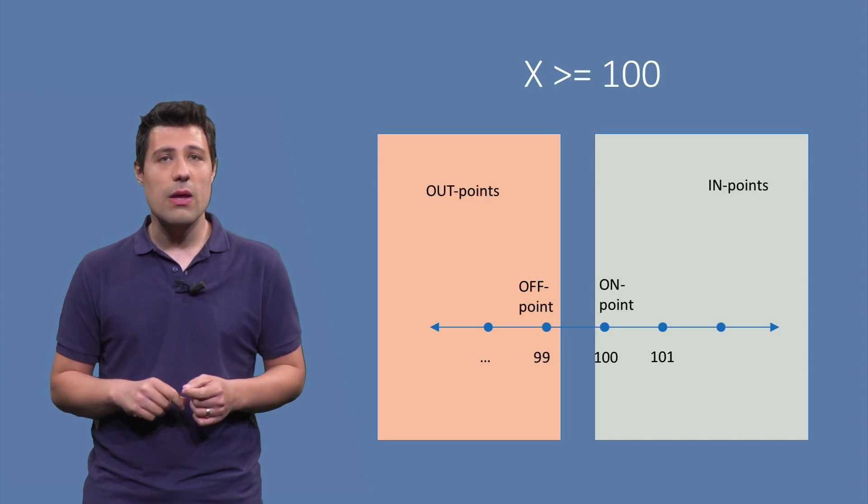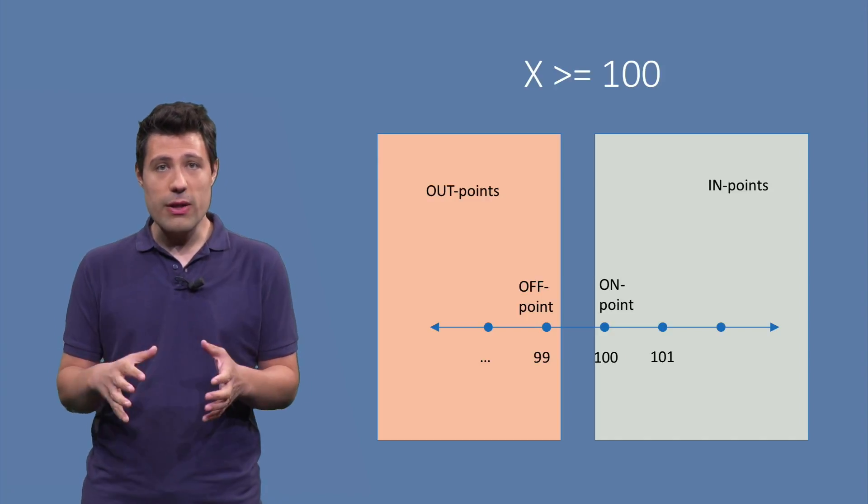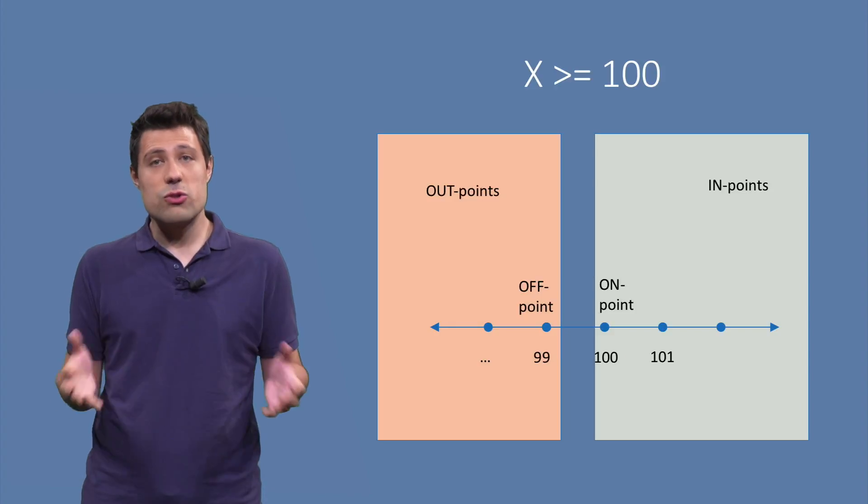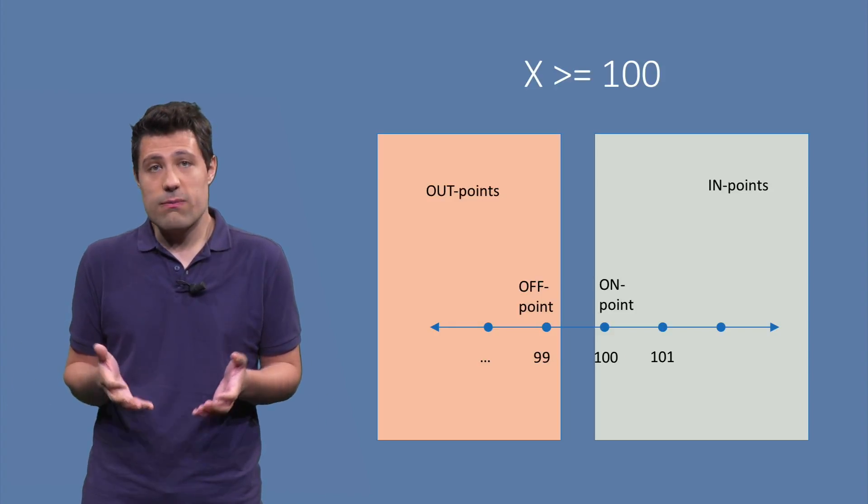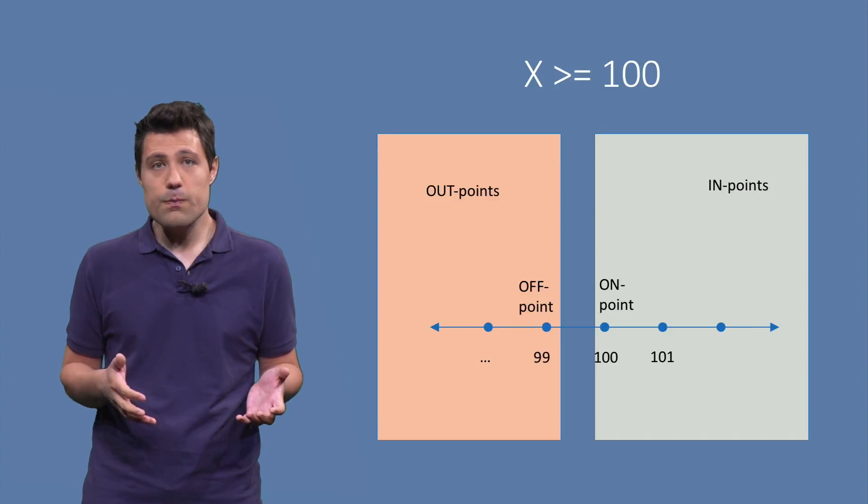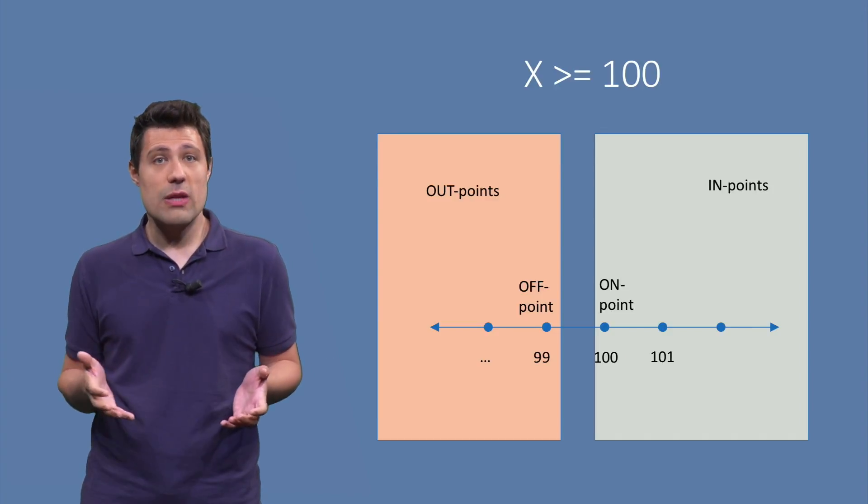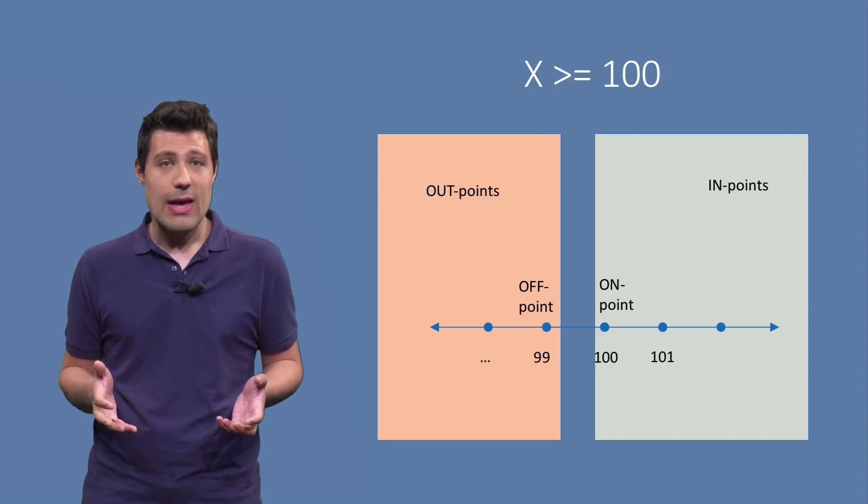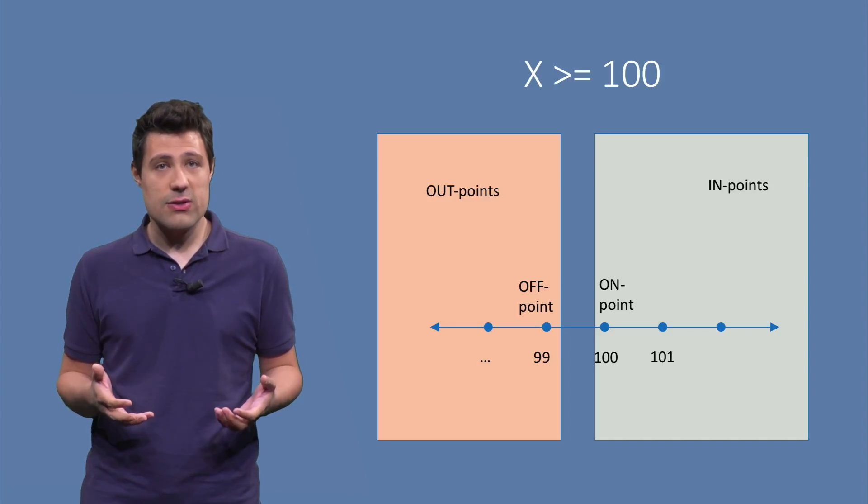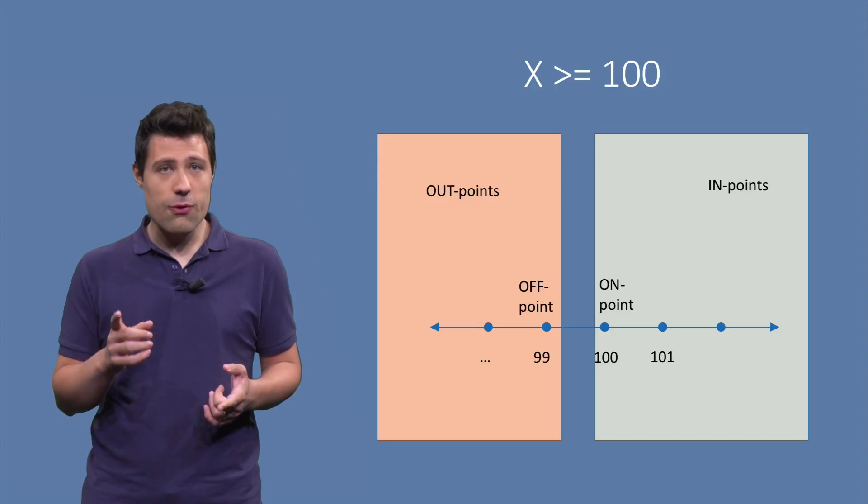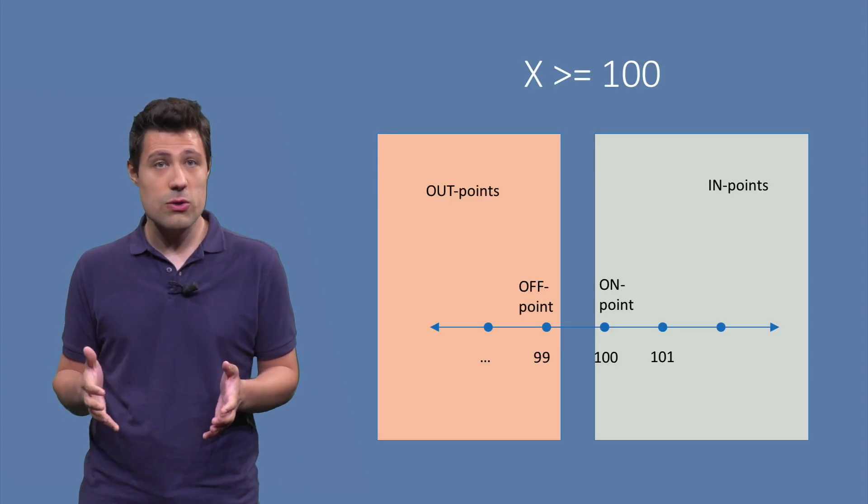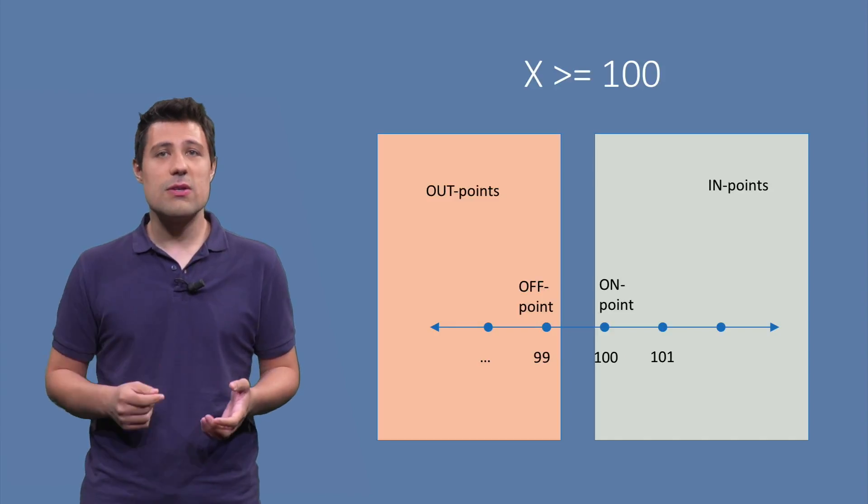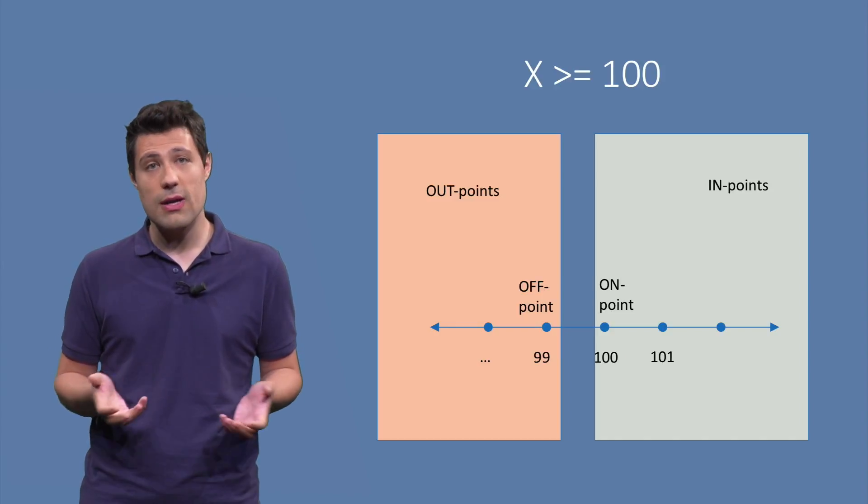Following this idea, we can think about in points, and in points make our condition always true, and the out points, which make our condition always false. So these are the four terms that we usually use when doing boundary analysis. The interesting thing is that, in this example, the off point is also an out point, and the on point is also an in point. But this doesn't have to be necessarily true for all cases.